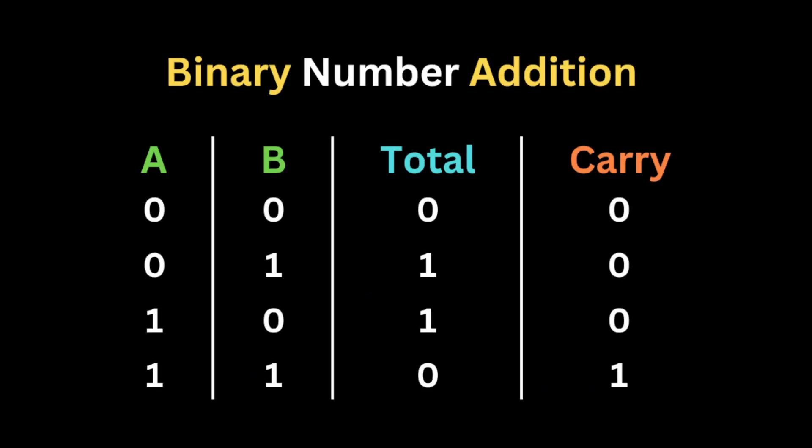Now that we have a basic understanding of decimal and binary numbers, let's look at how we add two binary numbers together. Binary addition works like normal decimal addition, except digits are only zeros and ones. If both a and b are zero, the sum is zero and the carry is zero. If one is zero and the other is one, the sum is one and the carry is zero. If both a and b are one, the sum is zero and the carry is one, which moves to the next column.